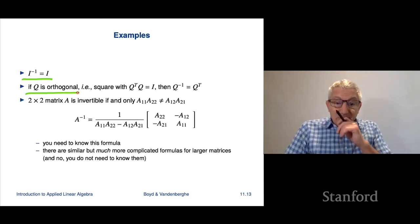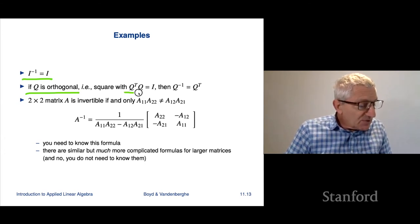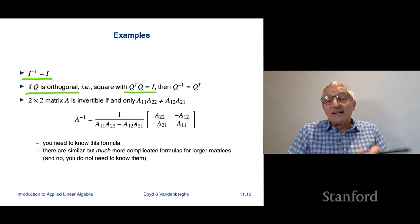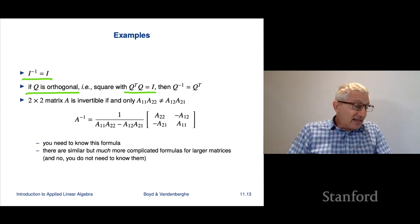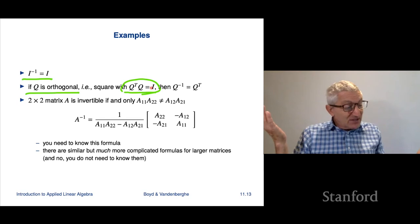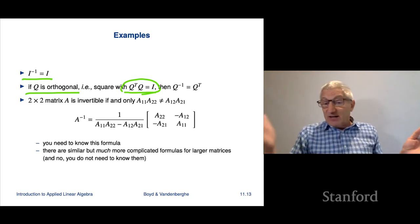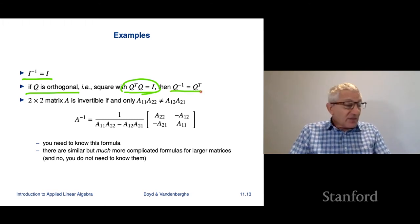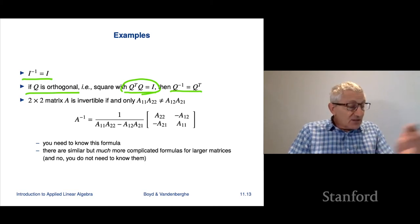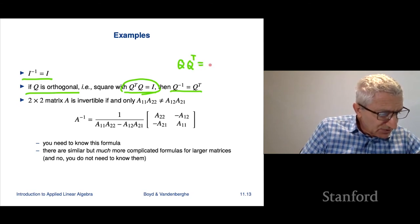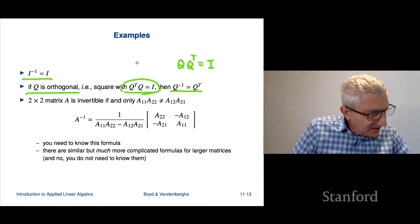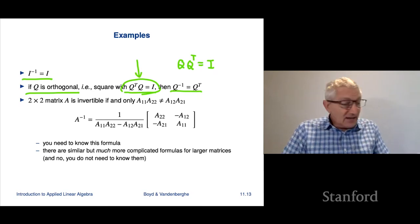If a matrix Q is orthogonal — meaning it's square with Q-transpose Q equals I — then Q-transpose is a left inverse of Q. Since Q is square, that means Q-transpose is just the inverse. So for an orthogonal matrix, Q-inverse equals Q-transpose: the inverse is nothing but the transpose. This also implies QQ-transpose equals I, which says the rows are also orthonormal — though that's not totally obvious.